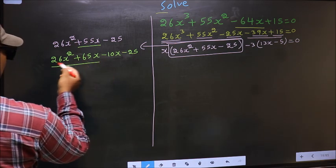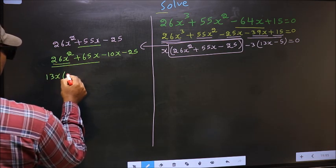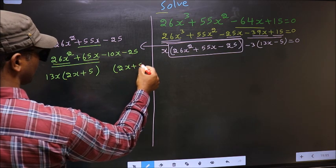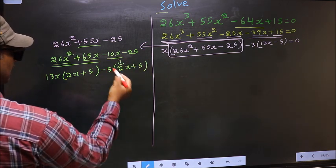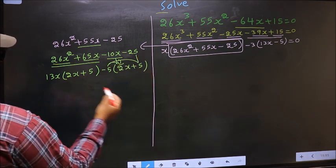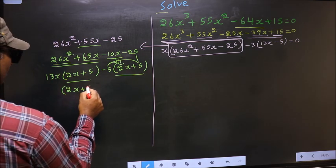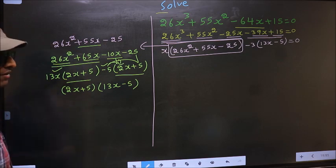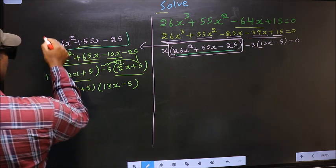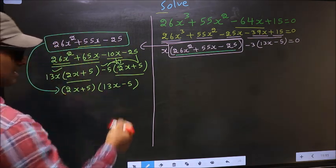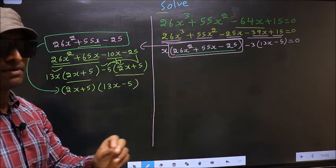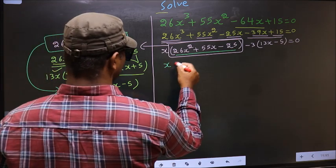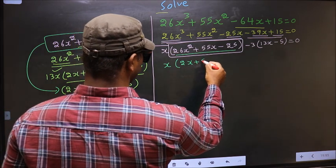What can be taken out common from these two terms is 13x. So here you get 2x plus 5. Now, whatever you got here, here also you should get the same thing. From this, 2x gone inside, so outside you get minus 5. Even if you multiply and check, still you get the same thing. Now take out 2x plus 5 common — so here you have 13x and here minus 5. In place of this quadratic, we should write this.